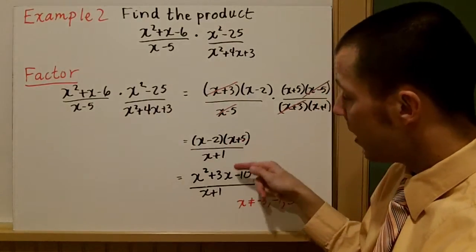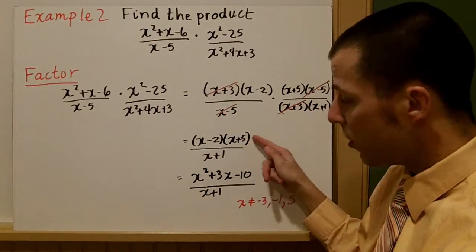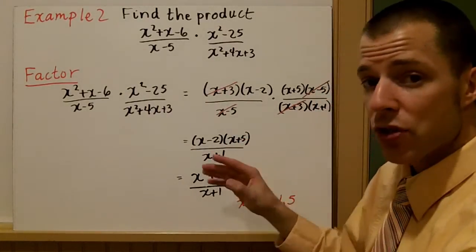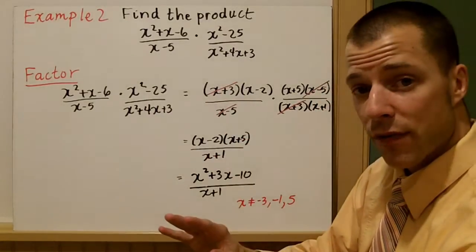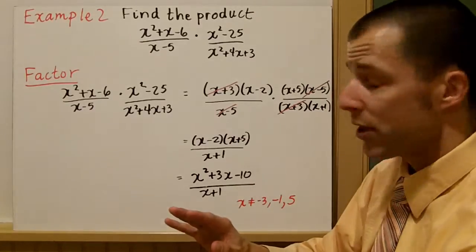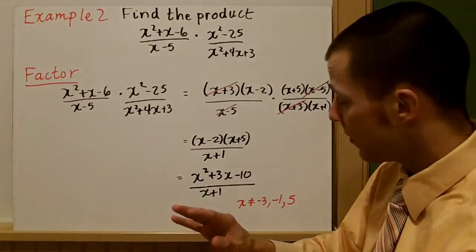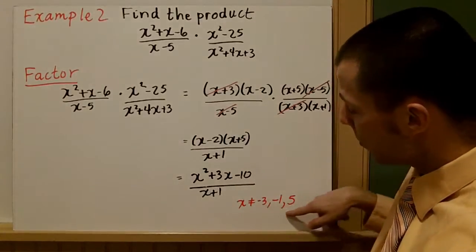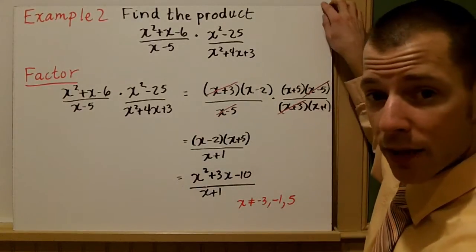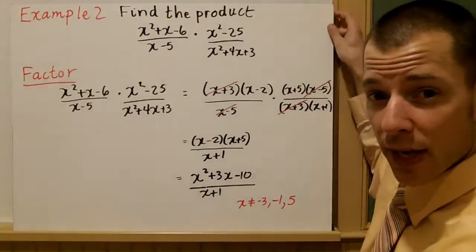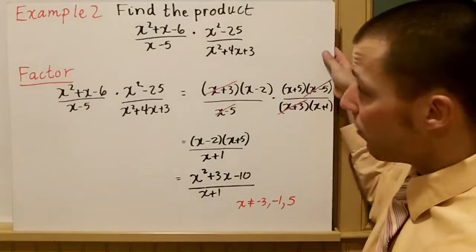Once you have nothing in common — no common divisors — you know you've gone far enough with these rational expressions. Please remember to note any restrictions that we have for the domain.